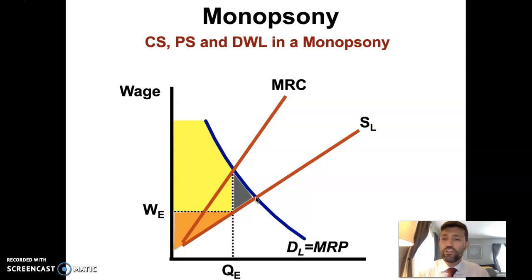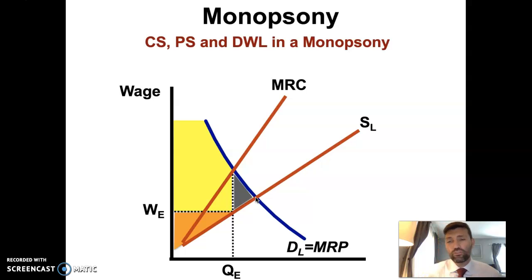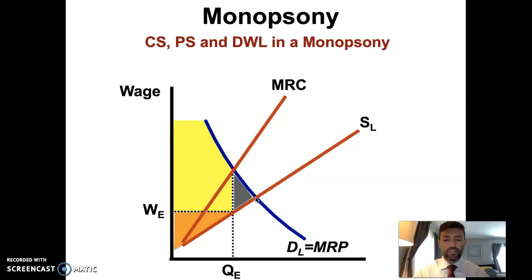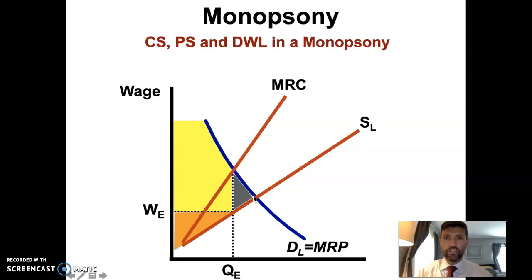The yellow region is the area of consumer surplus — remember, consumer surplus is beneficial to the firm. The orange area is producer surplus, which is beneficial to individuals or households. And the gray area is deadweight loss — the triangle near the equilibrium point — which you are probably familiar with. Deadweight loss is created by fewer transactions being made, or in this case fewer workers being hired, so unemployment.